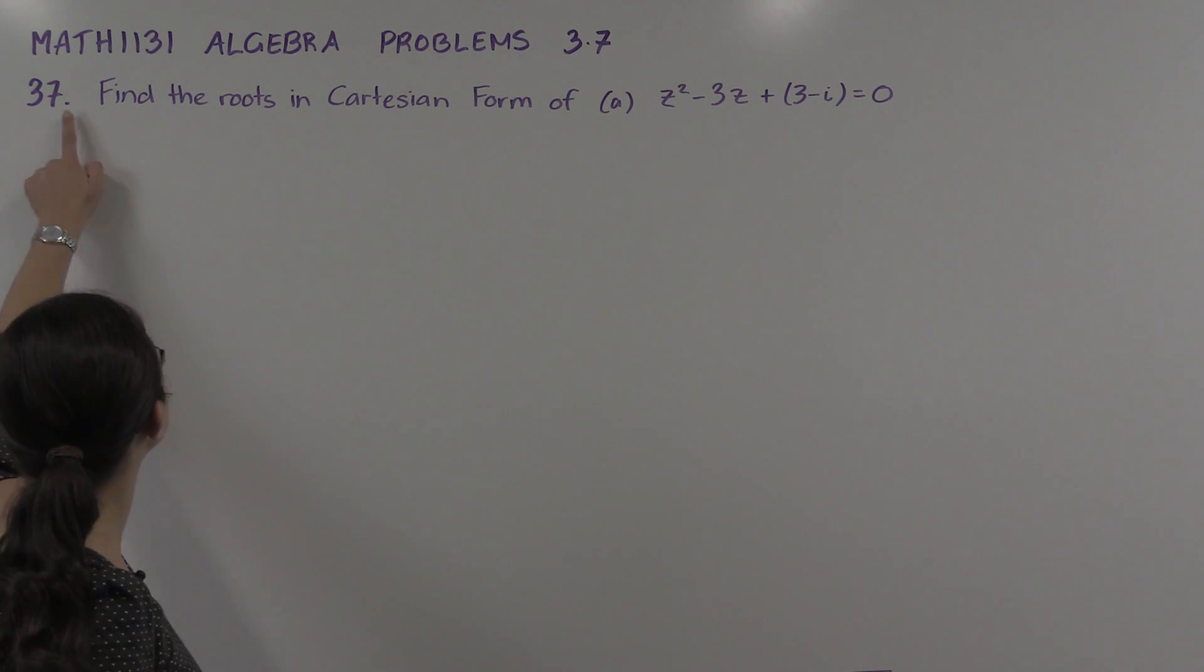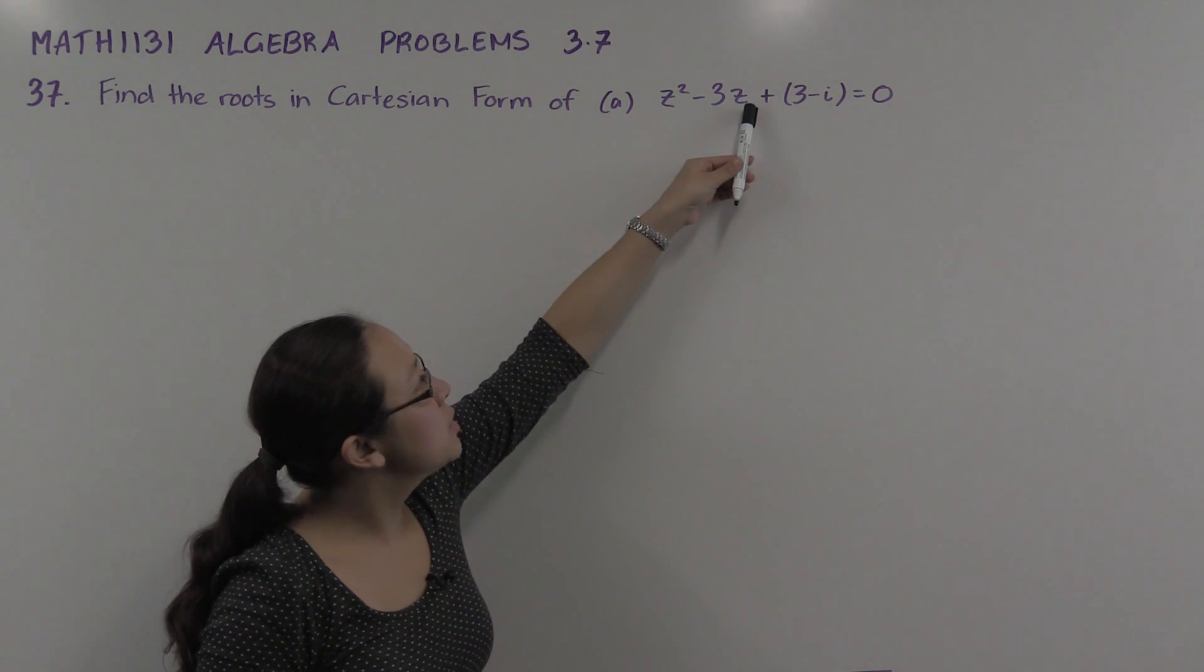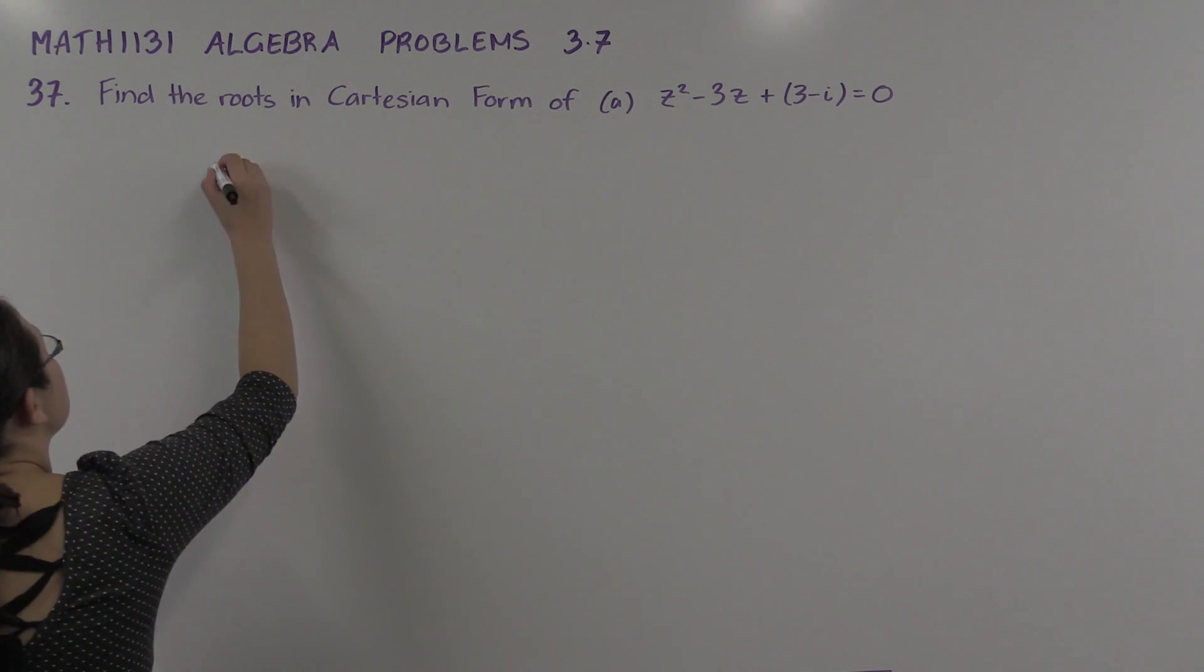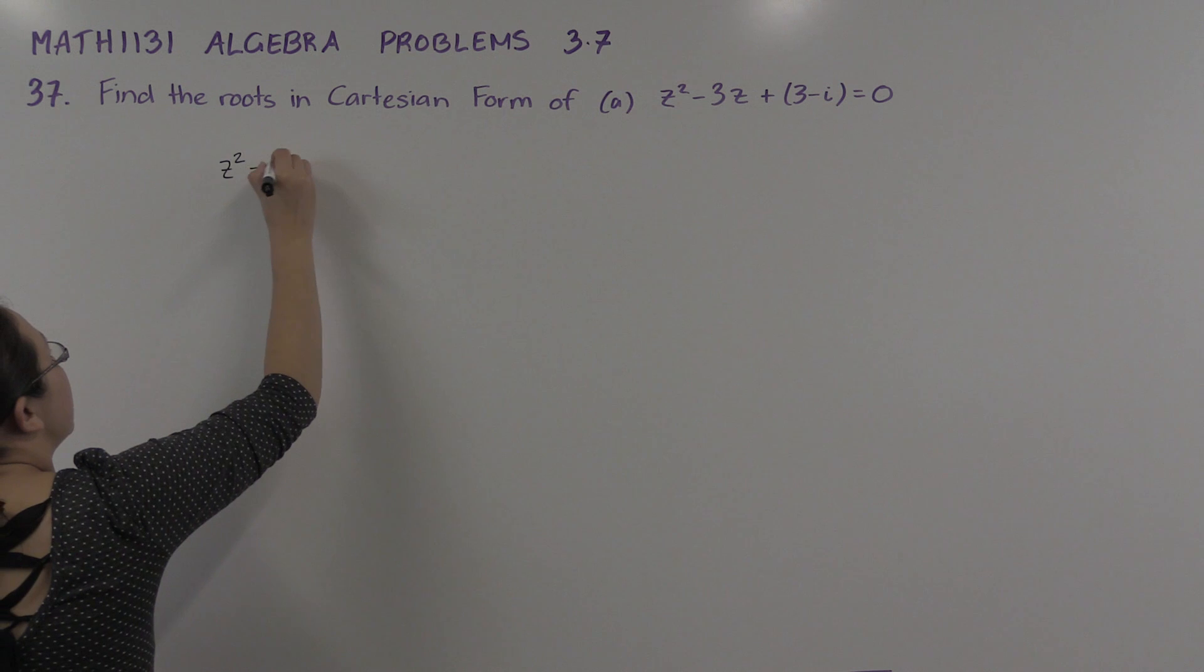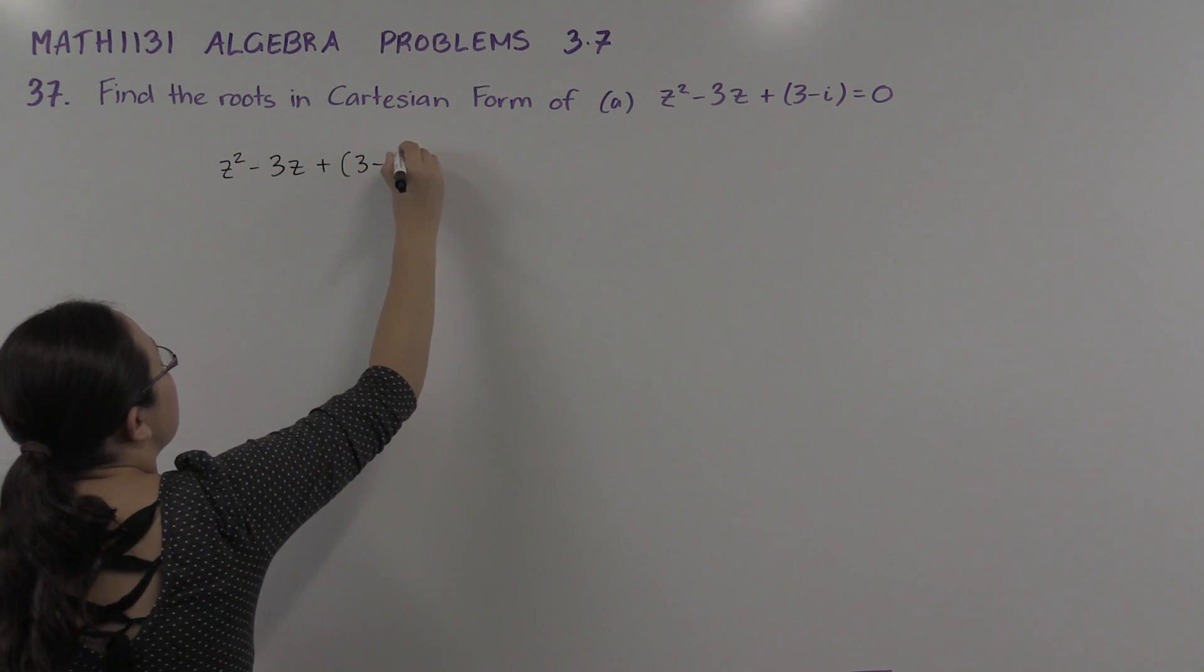Particularly we're going to do question 37 which is asking us to find roots of quadratic equations that have complex coefficients. So we're trying to solve z² - 3z + (3-i) = 0.